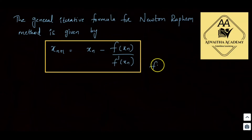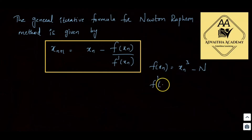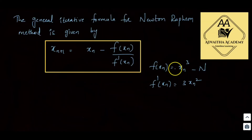So f of x_n is equal to x_n cubed minus n, and f dash of x_n is equal to 3 x_n squared. So substituting: x_{n+1} is equal to x_n minus (x_n cubed minus n) divided by 3 x_n squared. This gives us the derivative formula for the cube root of a number.